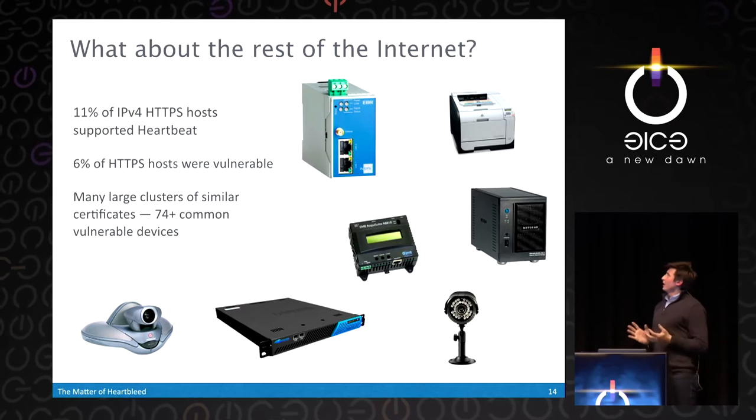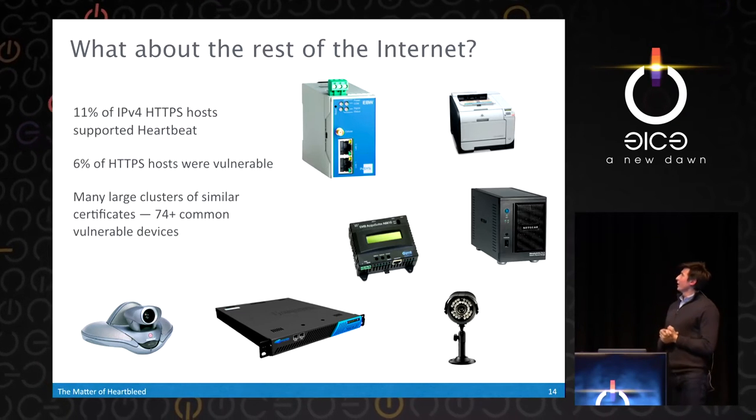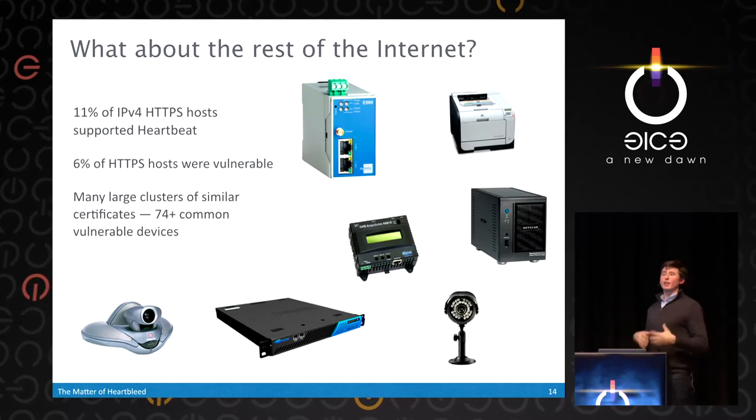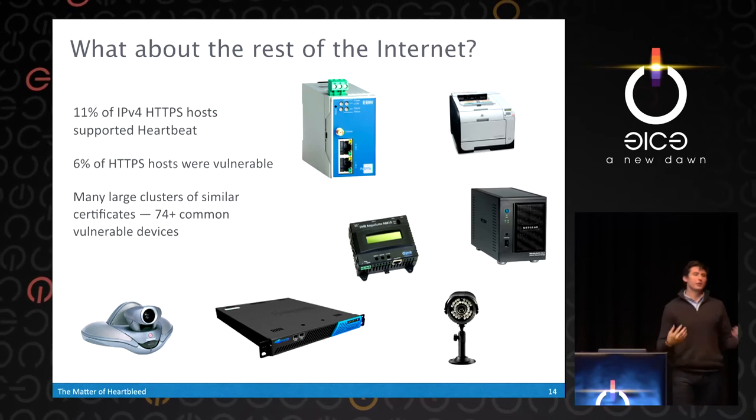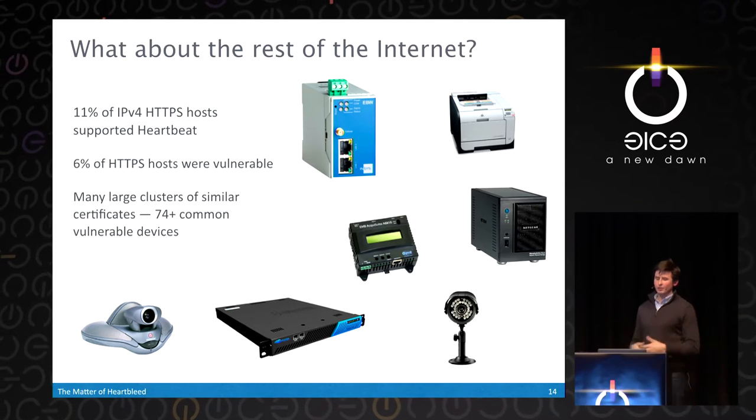When we look at the full IPv4 address space, only approximately 11% of HTTPS hosts supported HeartBeat and 6% of hosts were vulnerable. The main reason is that most HTTPS hosts on the IPv4 space aren't websites — they're embedded devices: home routers, video cameras, SCADA devices. These tend to use slimmed-down HTTPS software and never supported the HeartBeat extension. But about 6% were vulnerable, and the sad thing is almost all of these embedded devices still remain vulnerable today. Users don't go out and apply patches, even if available. We even saw a pizza point-of-sale software repeatedly vulnerable.